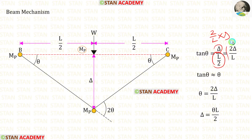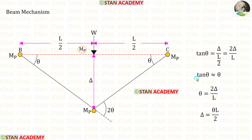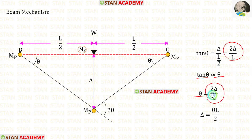We get 2δ/L. Since tan θ ≈ θ, we take θ = 2δ/L, from which we get δ = θL/2.